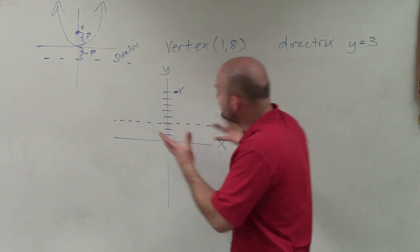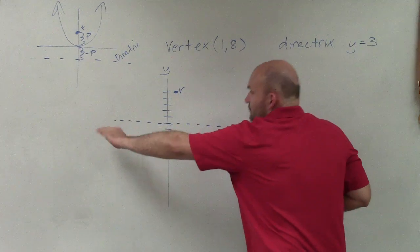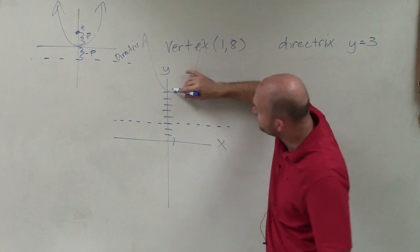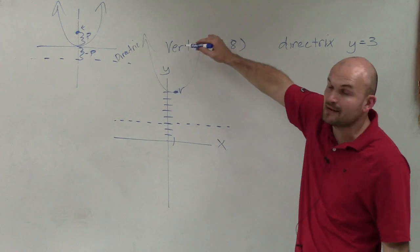So from this case, we can see that that's my vertex and my directrix is below it. I know my graph is going to look something like that, meaning my focus is somewhere inside of my parabola.